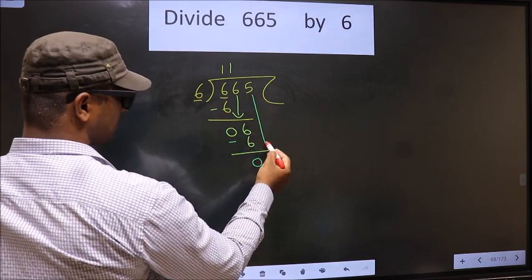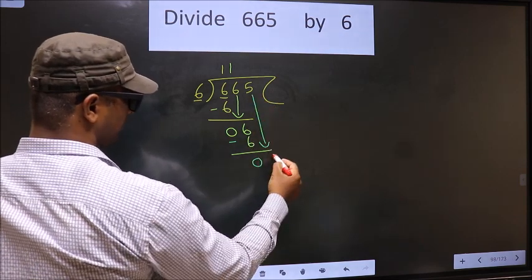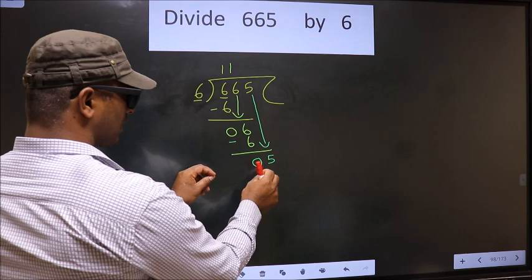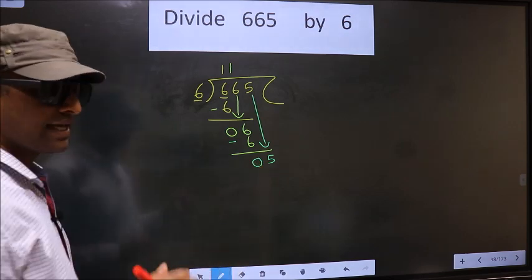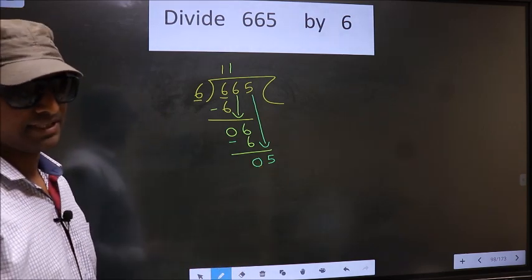Now bring down the beside number, that is 5 down. This is where the mistake happens, and the mistake is this.